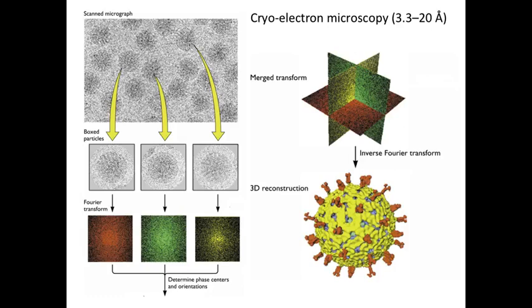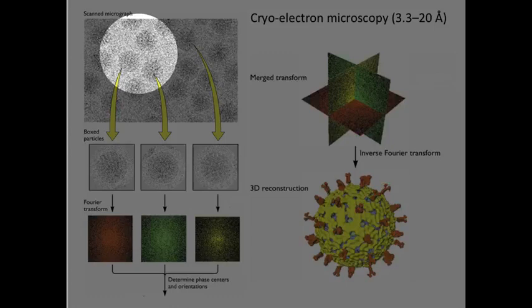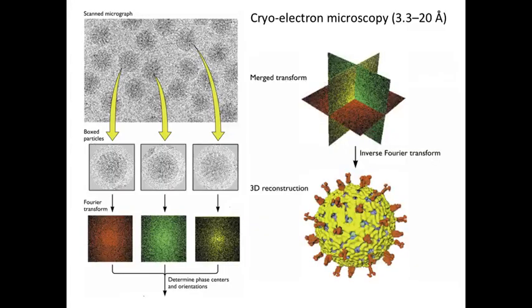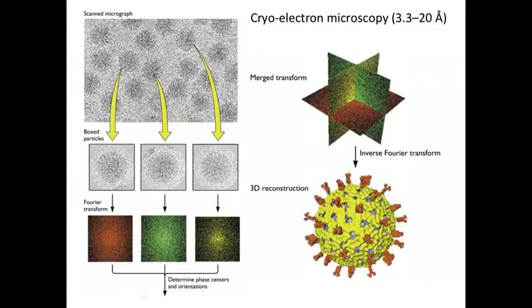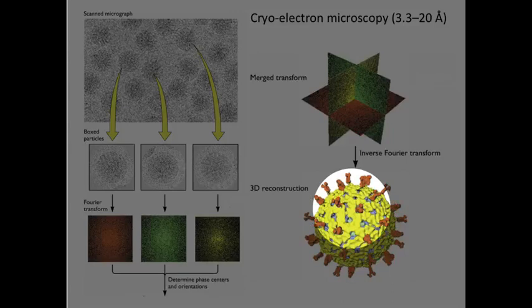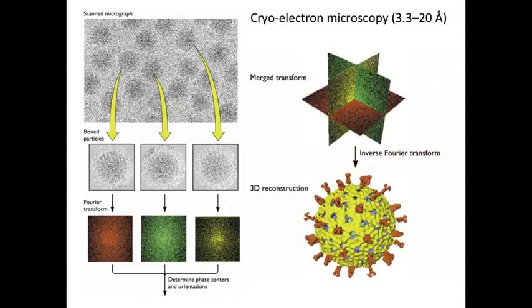A very common method being used today is cryo-electron microscopy. You use an electron microscope, but you don't stain the particles with an electron-dense dye, because that's what prevents high resolution. Instead, you take purified virus particles and freeze them in water, which gives enough contrast to photograph them. You then scan thousands of images in a computer; each image is present in a slightly different orientation. Computer programs take all those images and assemble a three-dimensional reconstruction — similar to a CAT scan where views taken in three dimensions are assembled into a 3D image.